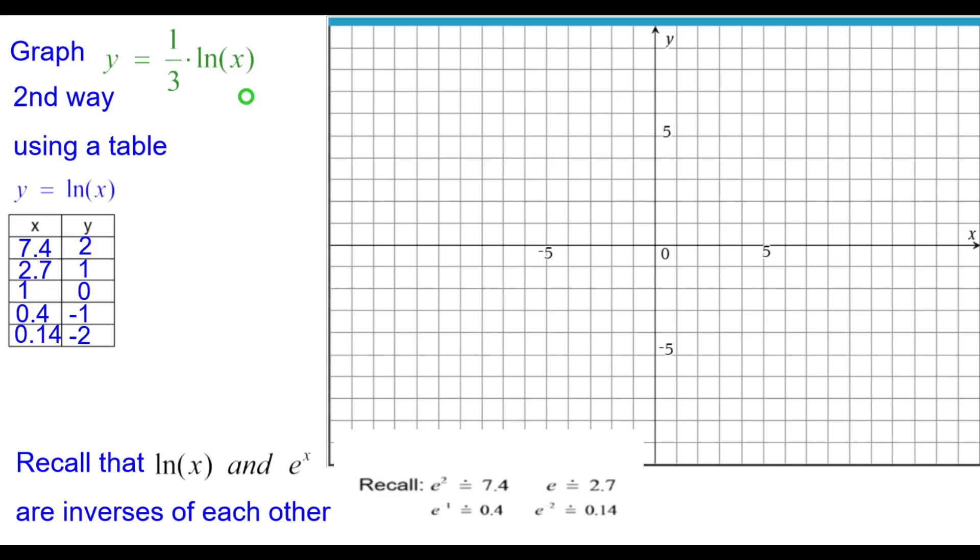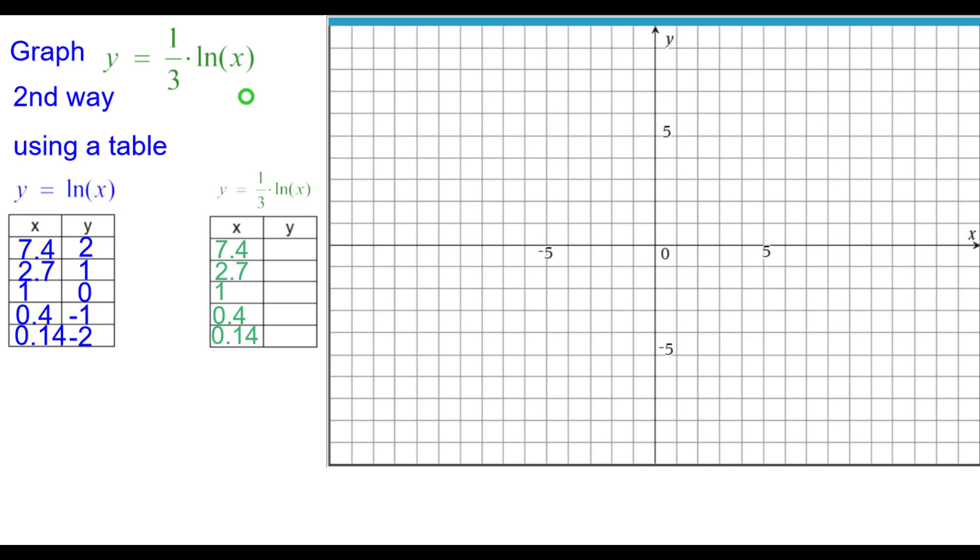So this is the table of the natural log, and we keep the x coordinates the same, and multiply each y value by one-third, that coefficient again. So two times a third is two-thirds, so we'll plot 7.4 comma two-thirds. One times a third is a third, 2.7 comma one-third.